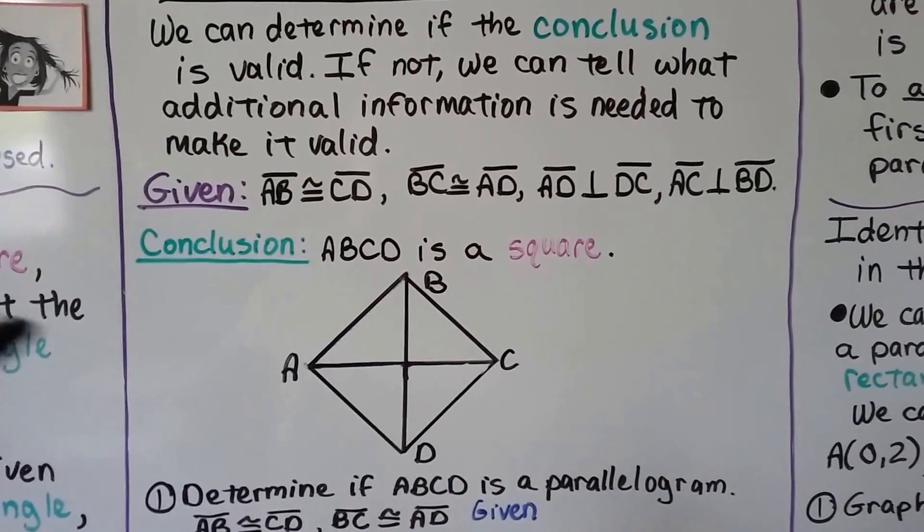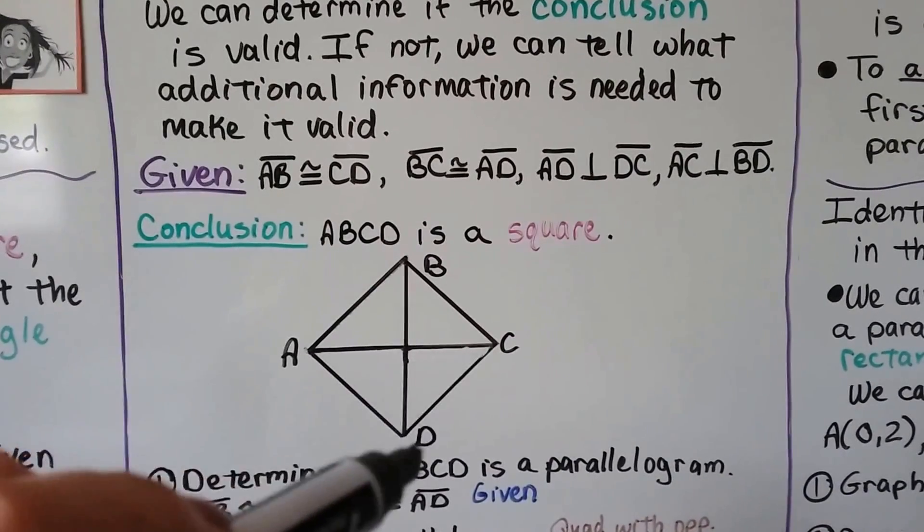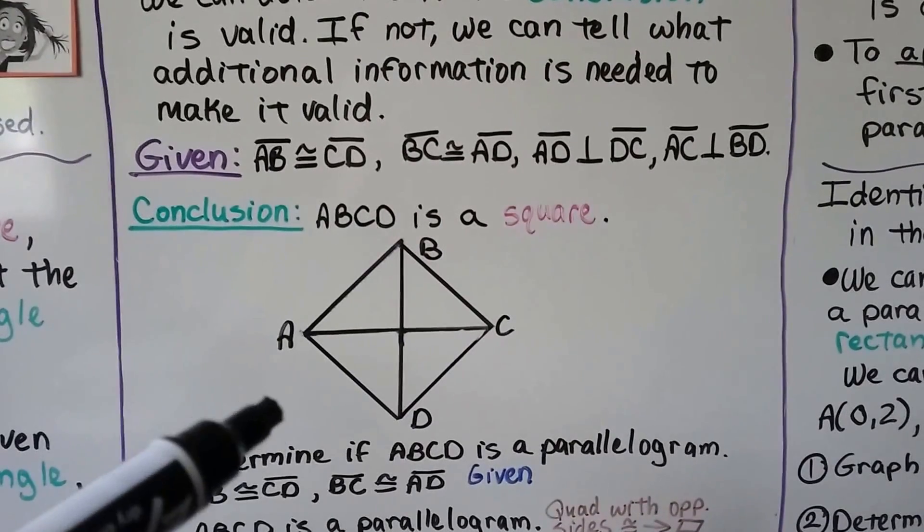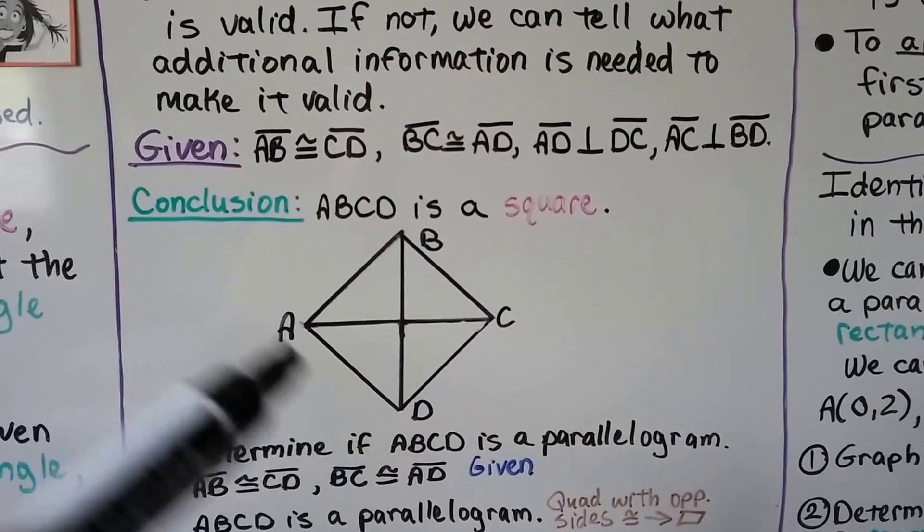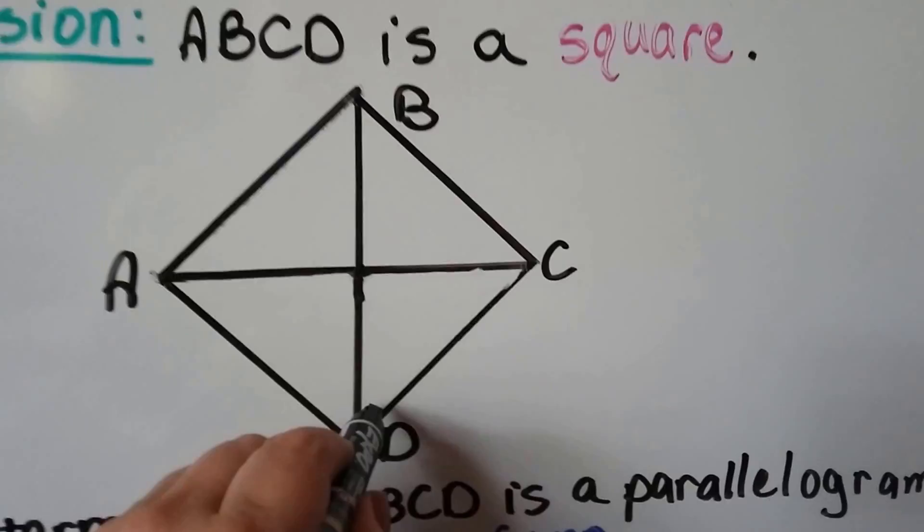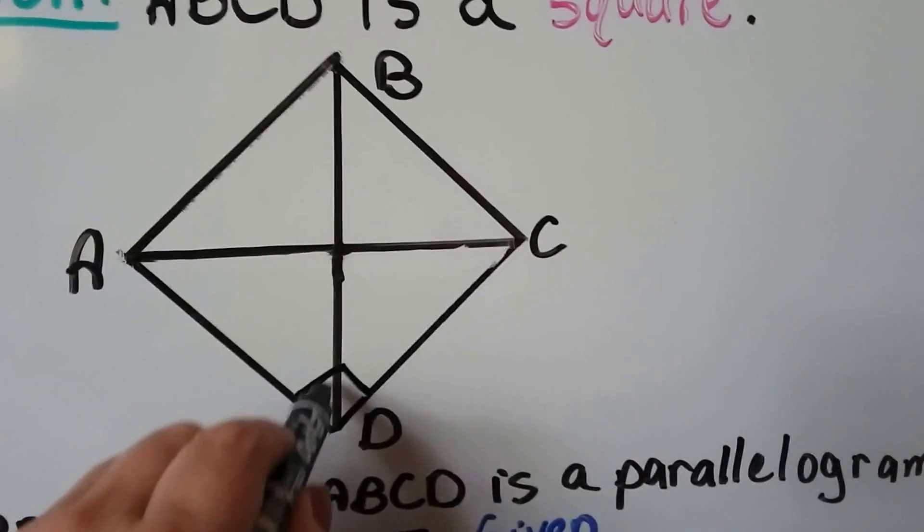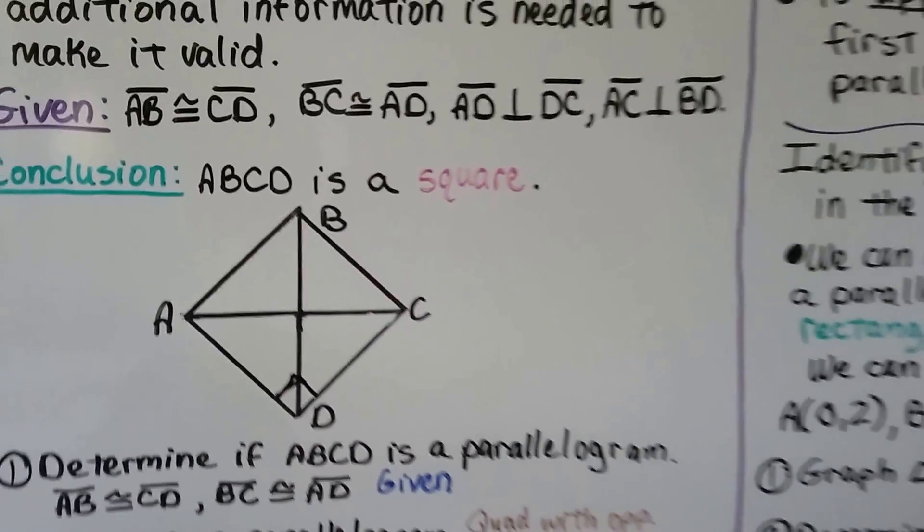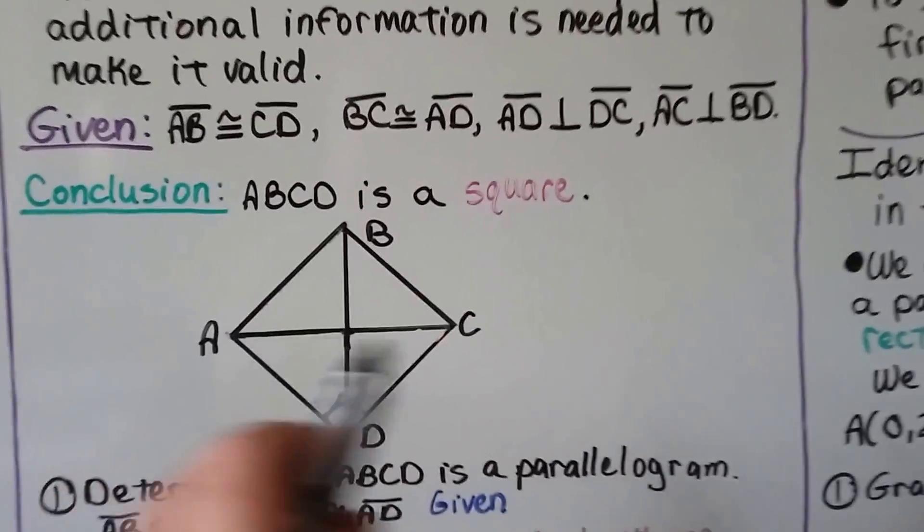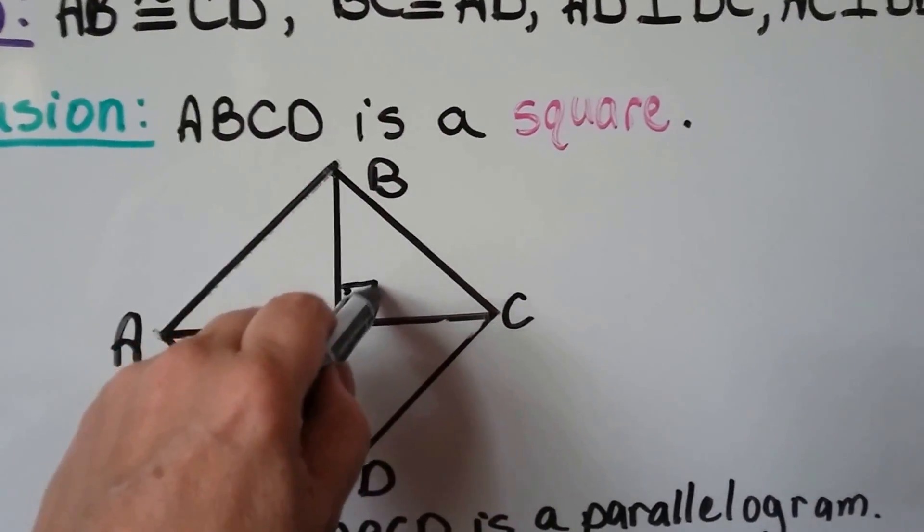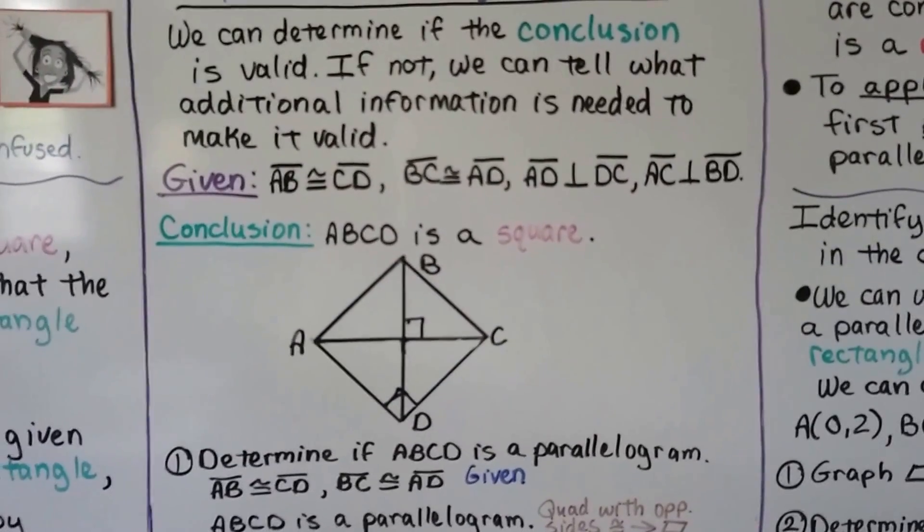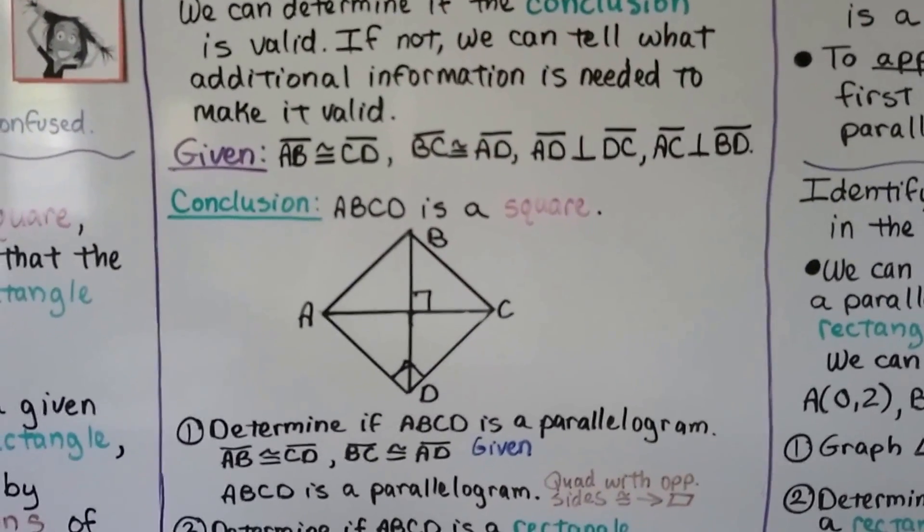It's given that segment AB is congruent to segment CD and that BC is congruent to AD. It's also given that AD is perpendicular to DC, so we can put a little right angle mark there. It's also given that AC is perpendicular to BD, so we know those are perpendicular. And the conclusion is that ABCD is a square. So let's see if that conclusion is valid.